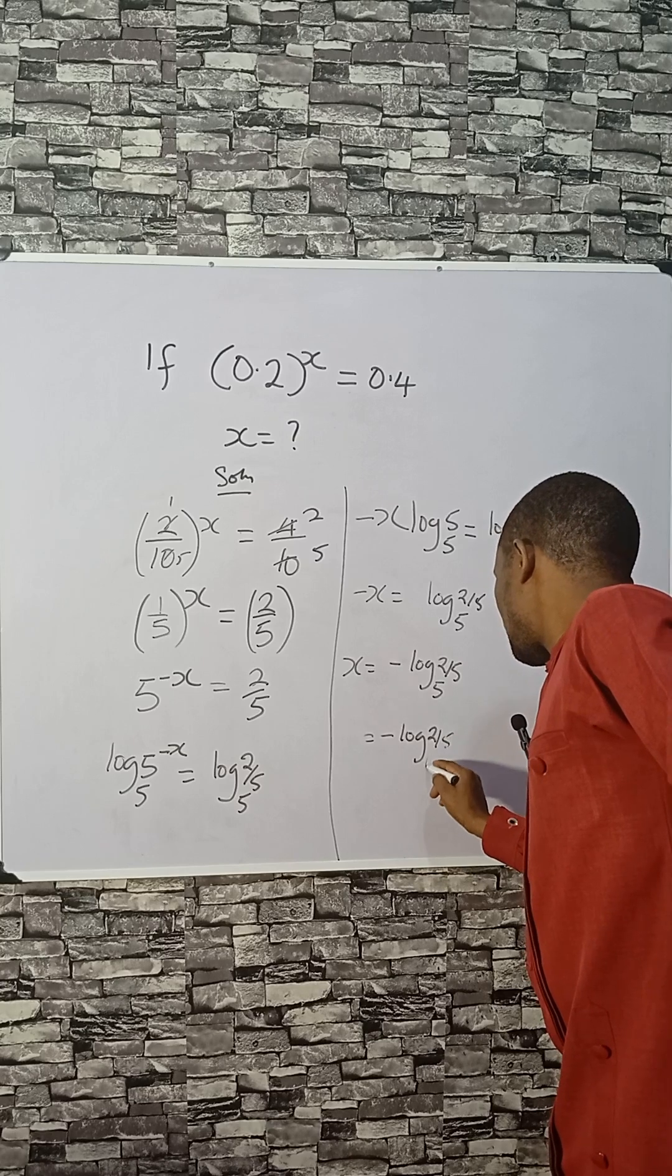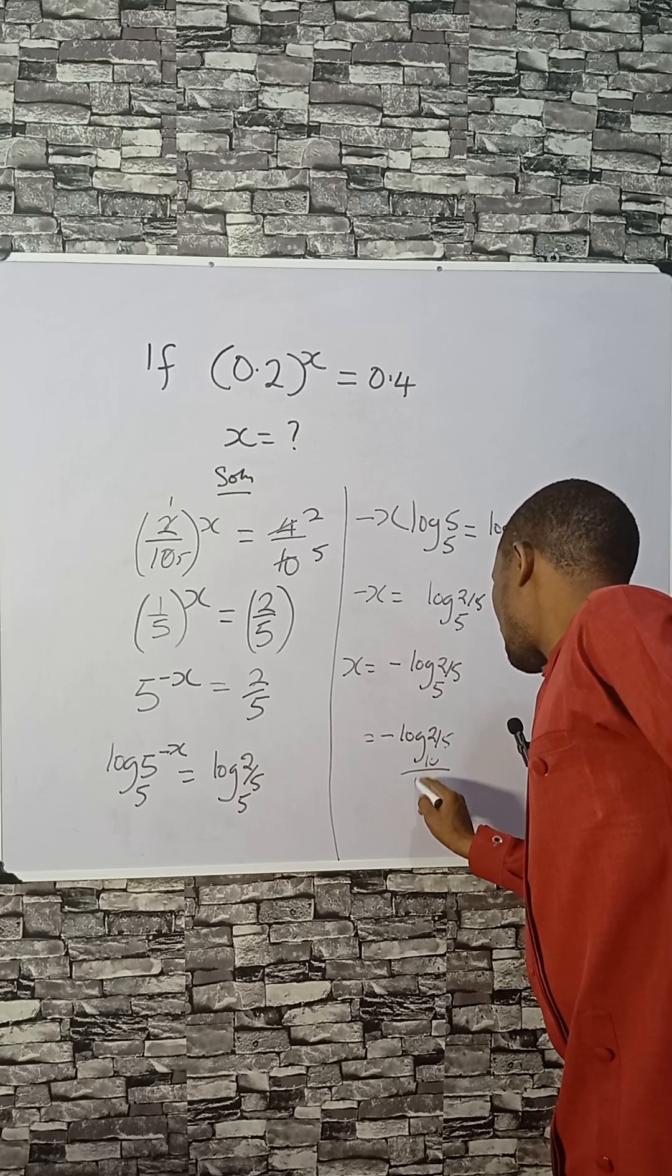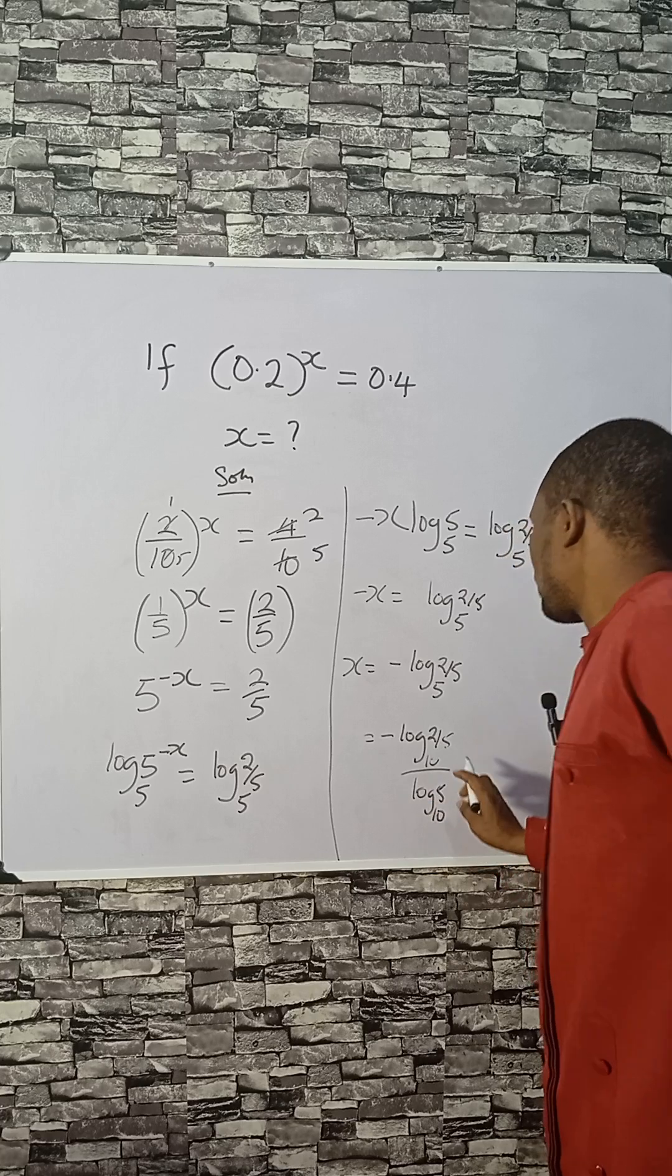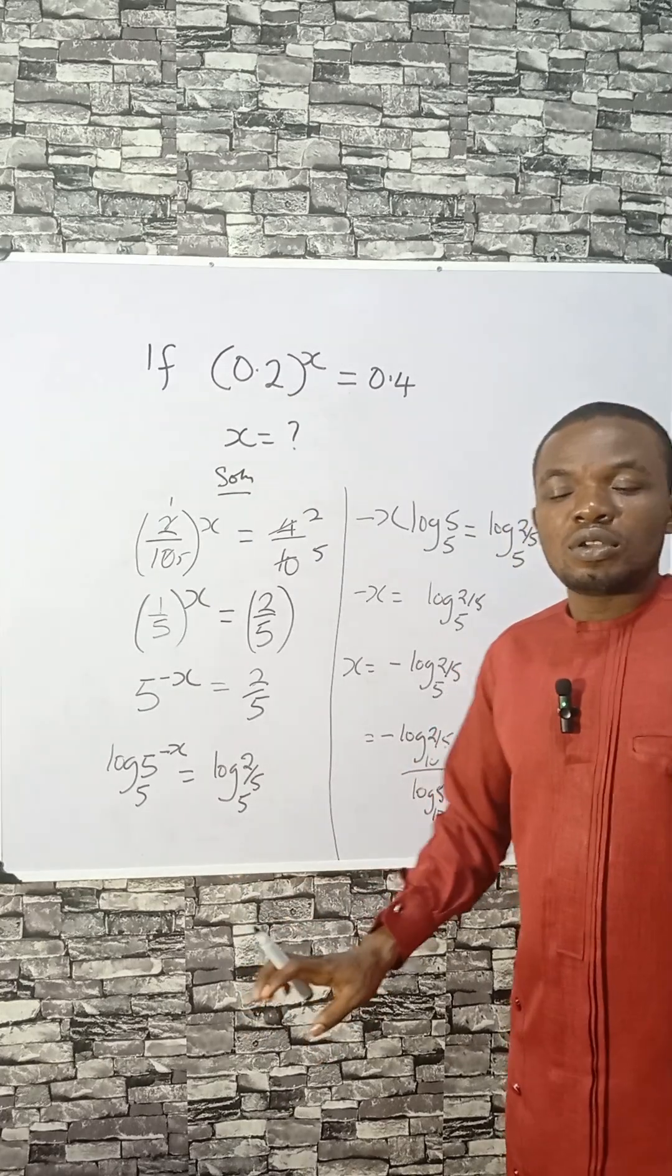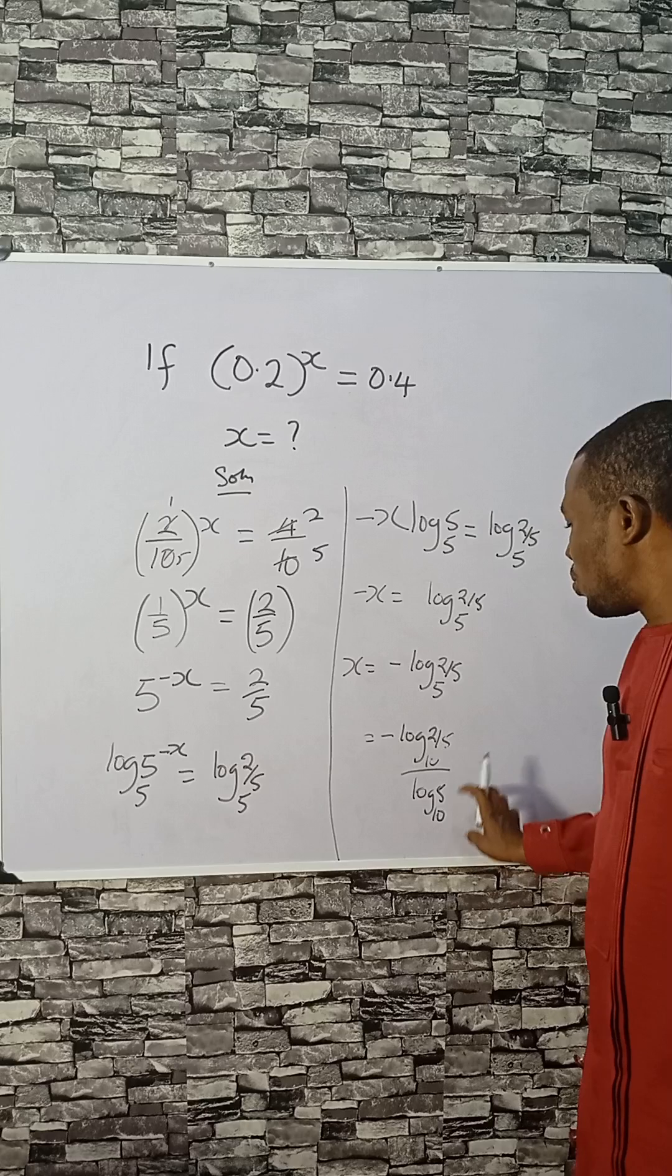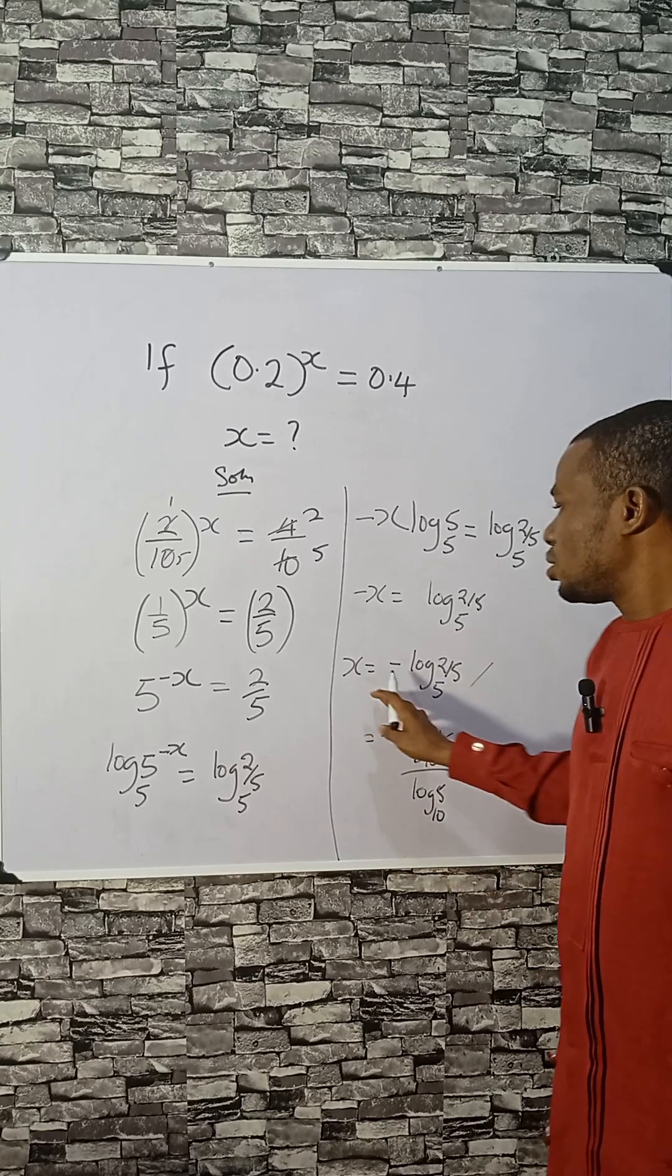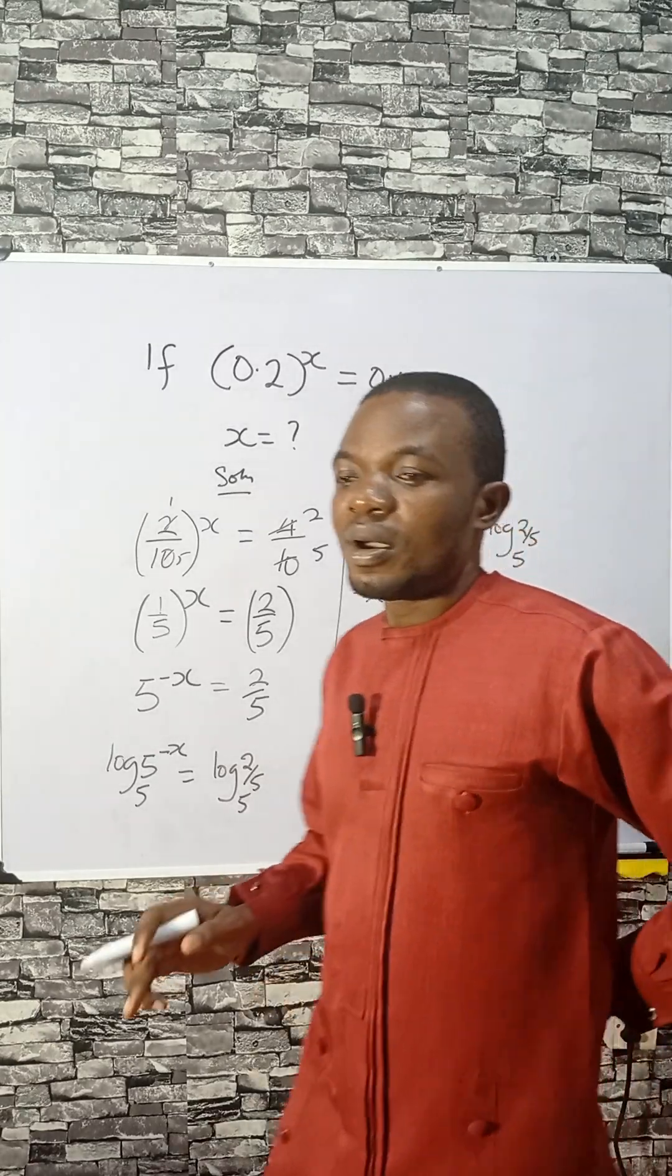2 divided by 5, base 10, then divide by log 5 base 10. That will give you a value. Use your calculator to check this. You will have a positive answer, but you can leave it here. You are still correct. So this is the value of x. Like and share. Bye bye.